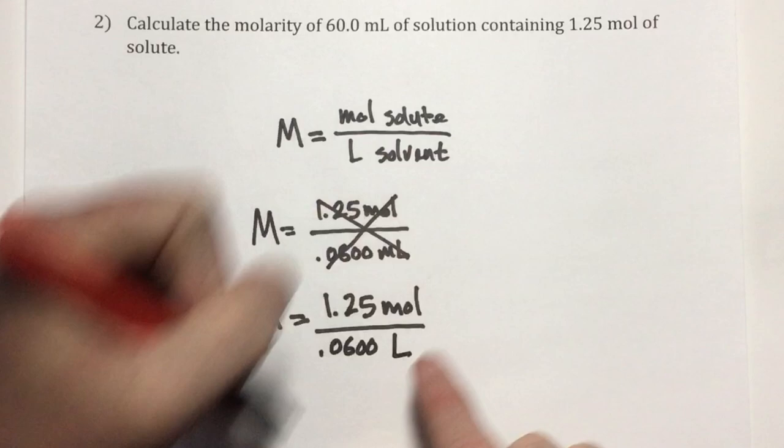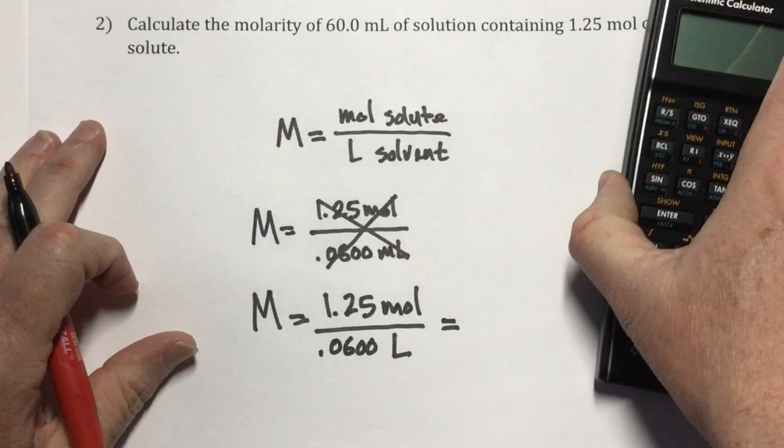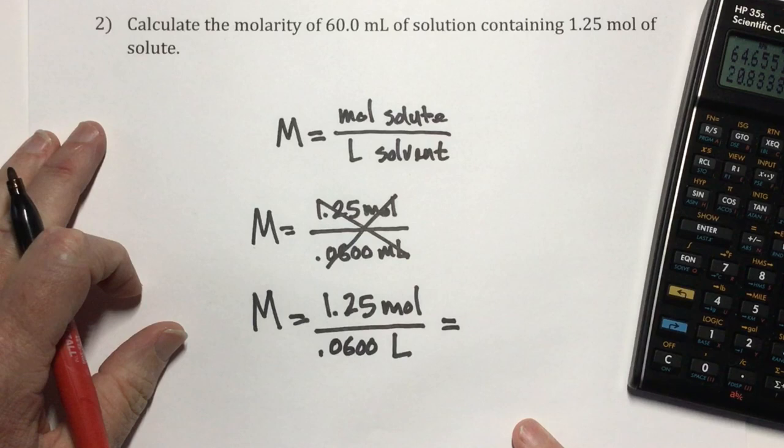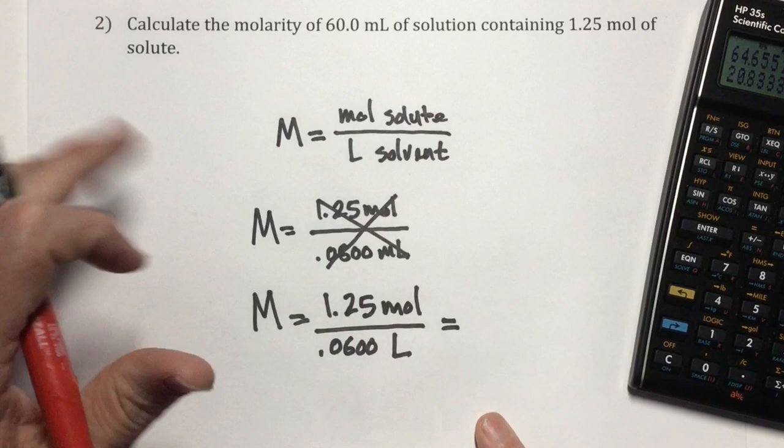I get my calculator and say 1.25 divided by 0.06. That comes out to 20.8333, but my answer should have three sig figs, which will be 20.8. Answer 2: 20.8.